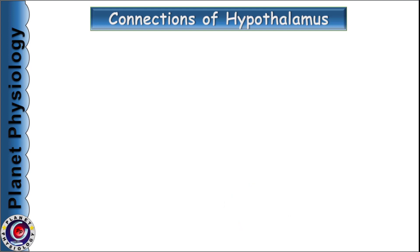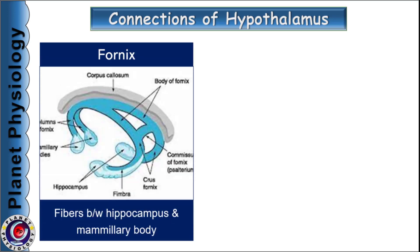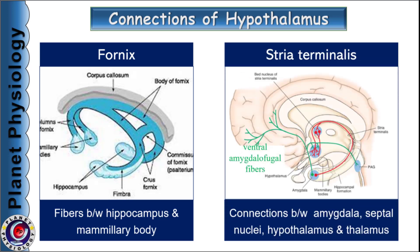Neural connections of the hypothalamus with the forebrain are reciprocal and form three major fibre systems: the fornix, stria terminalis, and ventral amygdalofugal fibres. The fornix is the bundle of nerve fibres connecting the hippocampus and mammillary bodies. The second prominent fibre system is the stria terminalis, which includes reciprocal connections between the amygdala and hypothalamus — shown in red colour, it forms a longer and less direct pathway.